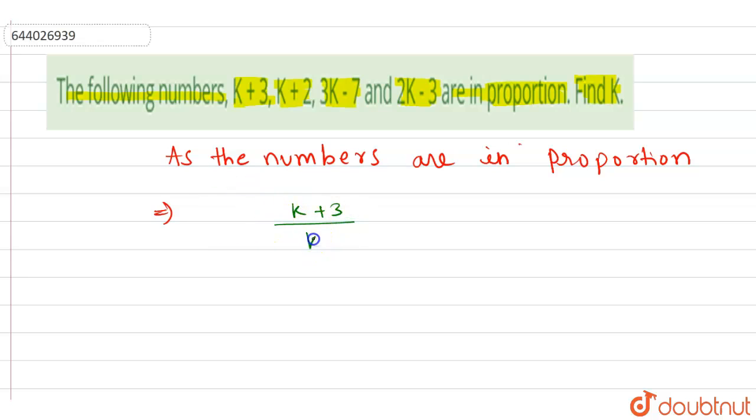K+3 upon K+2 is equal to 3K-7 upon 2K-3. The ratio will be equal.